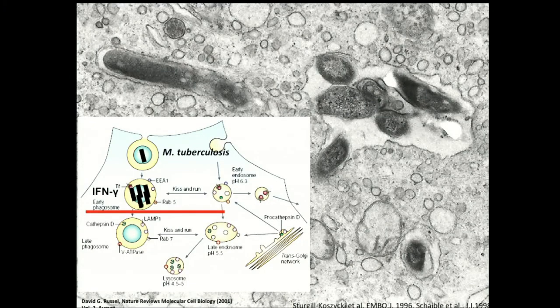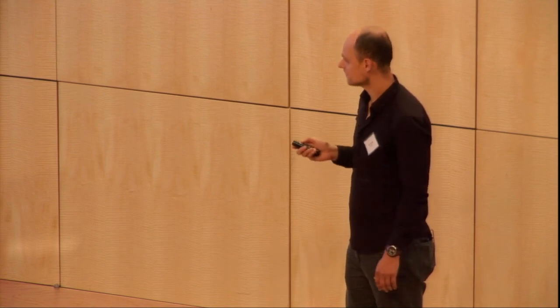In my first lecture at university when I heard about TB, it seemed to be that TB enters macrophages and it survives in macrophages because it blocks phagosome maturation and is able to survive and proliferate in these phagosomes. Later on in my studies, I learned that there's much more about TB than just living in these cells — they might also live extracellular, form biofilms, or have capsules. And there's one cell type which I think was neglected for a while, and these are neutrophils in TB.